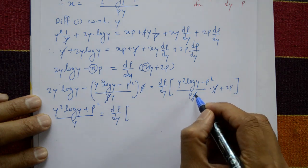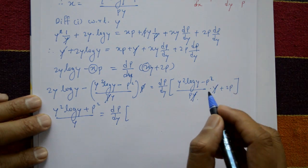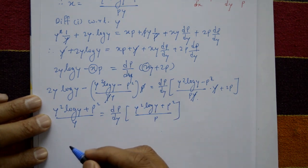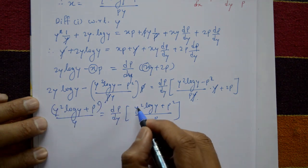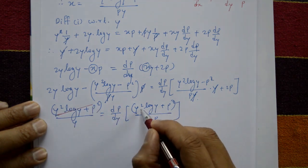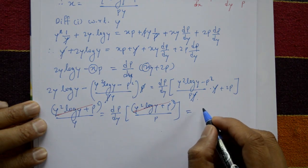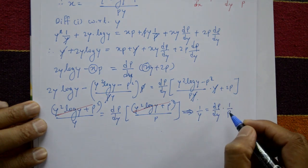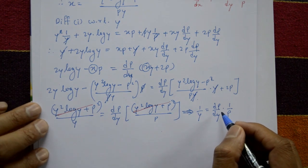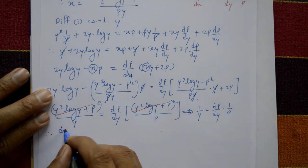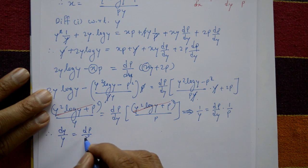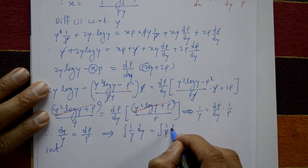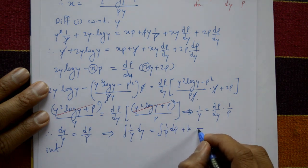The p terms cross-multiply: 2p² − p² = p², leaving y² log(y) + p² / p. Both bracket expressions cancel on each side, leaving 1/y = (1/y) · dp/dy · (1/p). It is now possible to separate variables: dy/y = dp/p. Integrating both sides: ∫(1/y)dy = ∫(1/p)dp + constant.